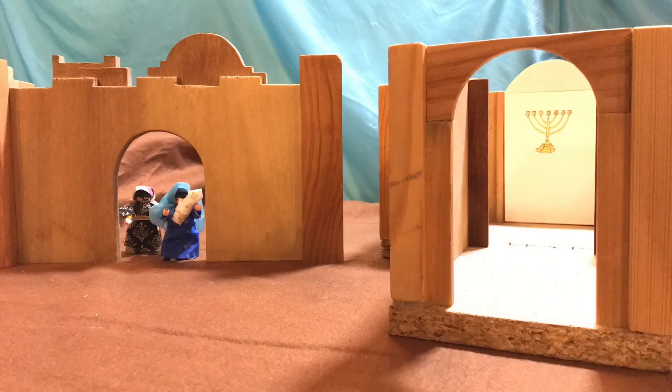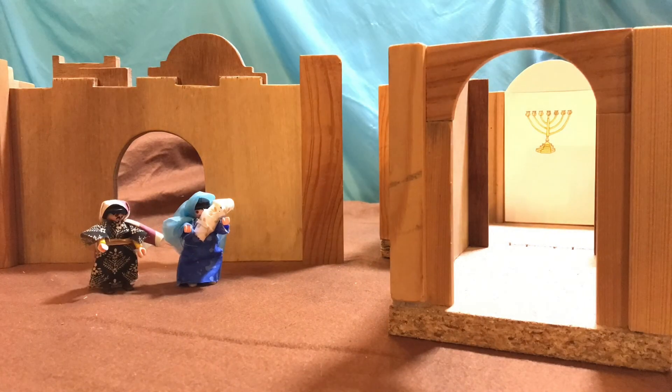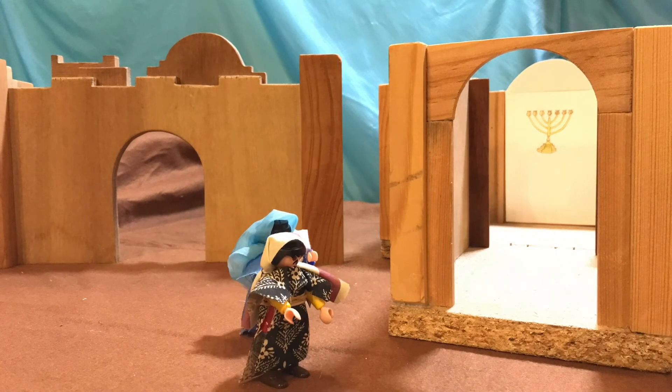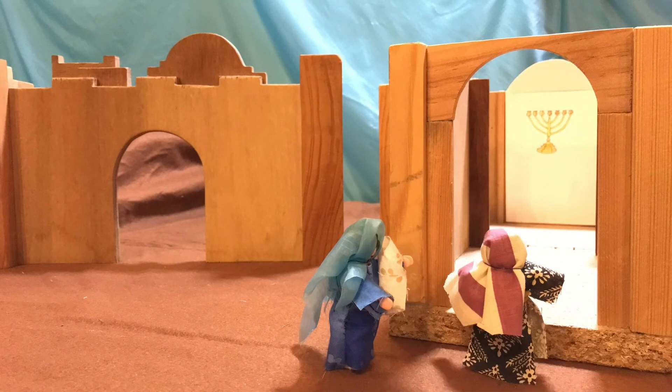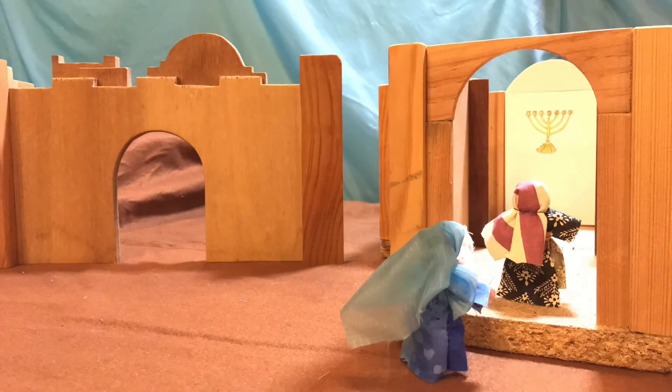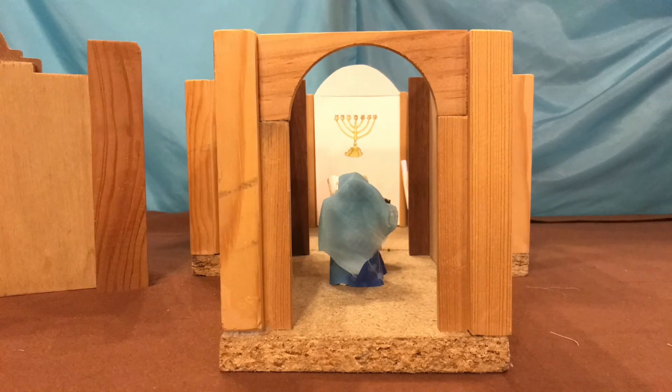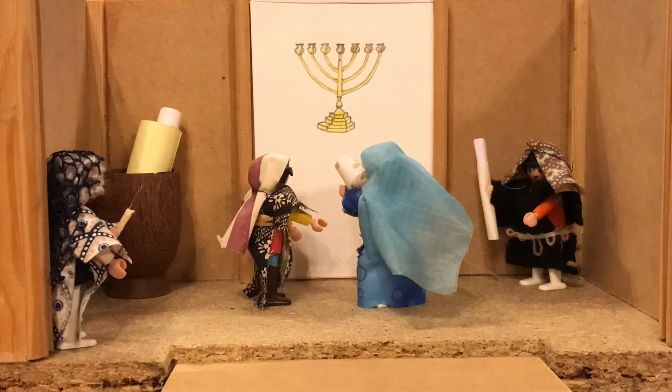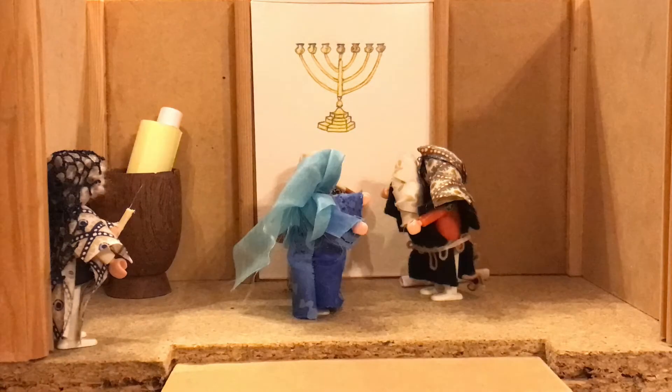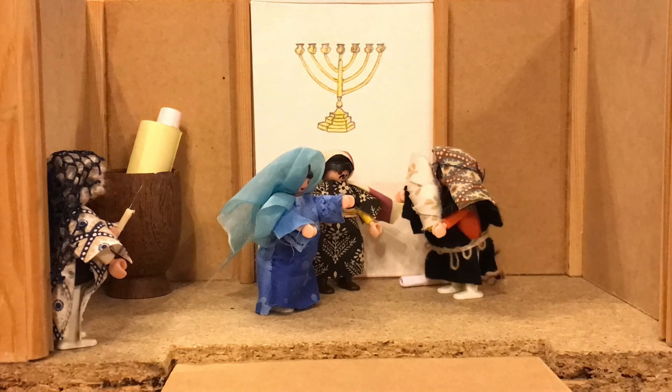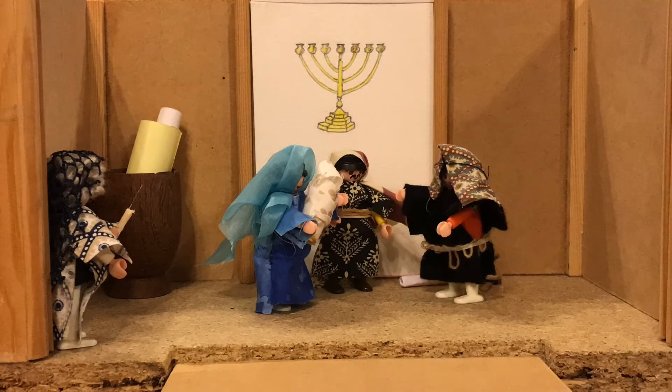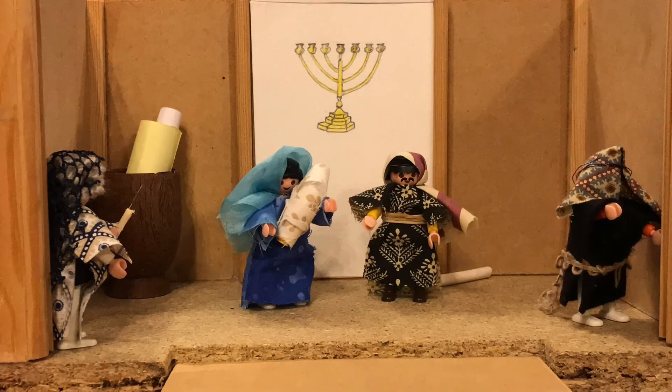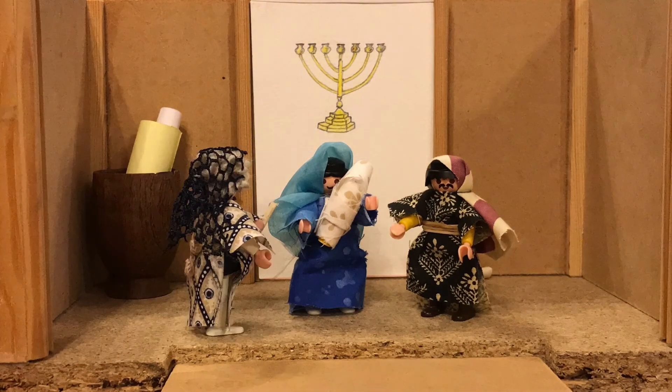When Jesus was born, Joseph and Mary took him to the temple in Jerusalem, as was the custom, and they offered him to God. In the temple, they met an old man called Simeon. Very tenderly, he took Jesus in his arms and said, Now, Father, your servant can go in peace. I have seen your salvation, the light of the world. He blessed Mary and Joseph, and when he gave the baby back to Mary, he said, This child is destined for the falling and rising of many in Israel. He'll be a sign.